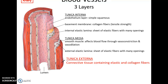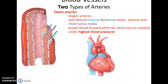The outermost layer is the tunica externa, made of connective tissue consisting of elastic and collagen fibers that help to hold the blood vessels in place. In large enough blood vessels, the tunica externa may even carry smaller blood vessels along the blood vessel itself.